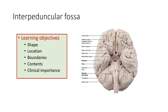So with this orientation let us see what is the interpeduncular fossa. You are seeing a depressed area between the two temporal lobes on the inferior surface, and this is the interpeduncular fossa. Its shape, location, boundaries, contents, and clinical importance we are going to discuss.